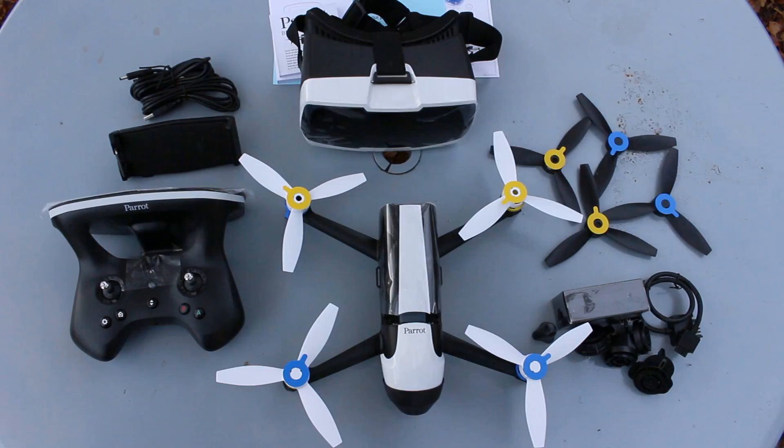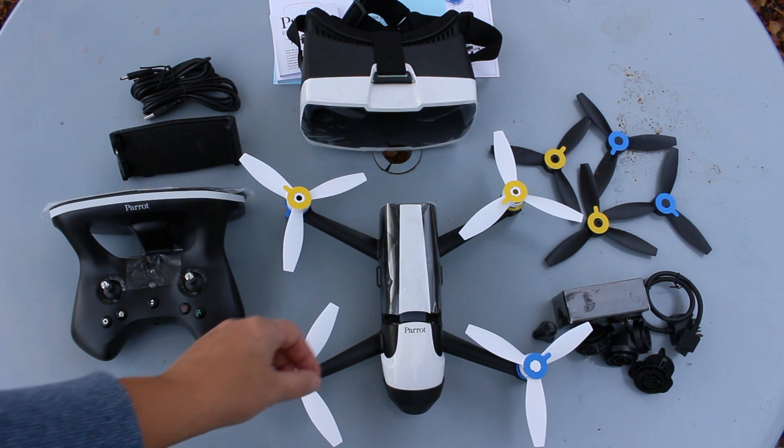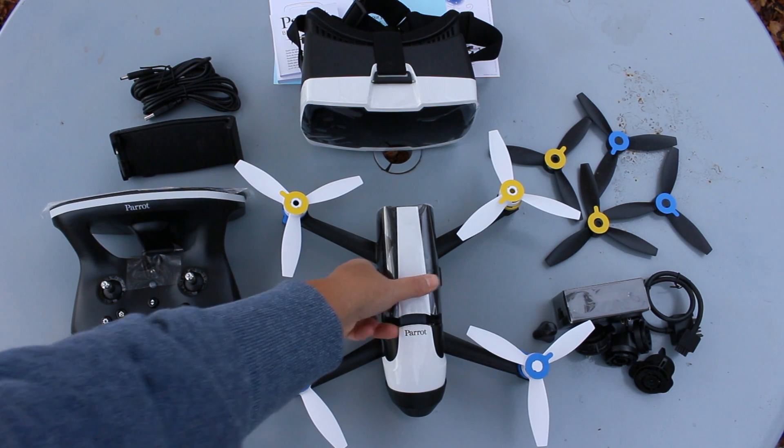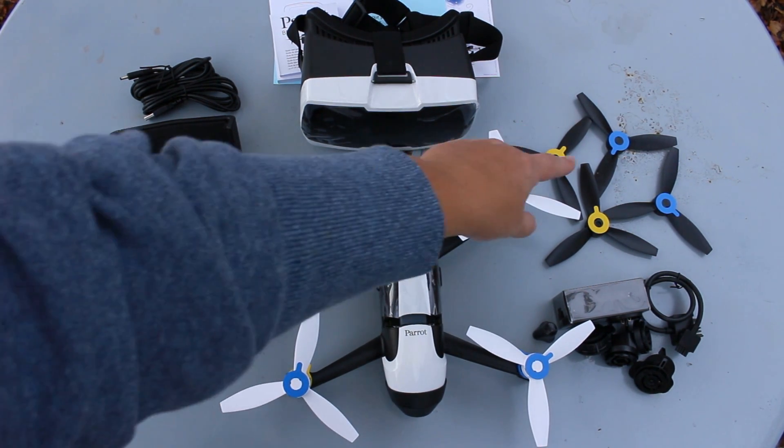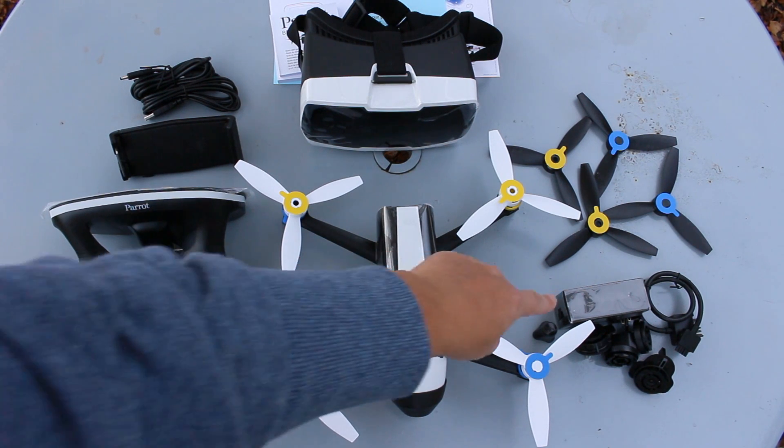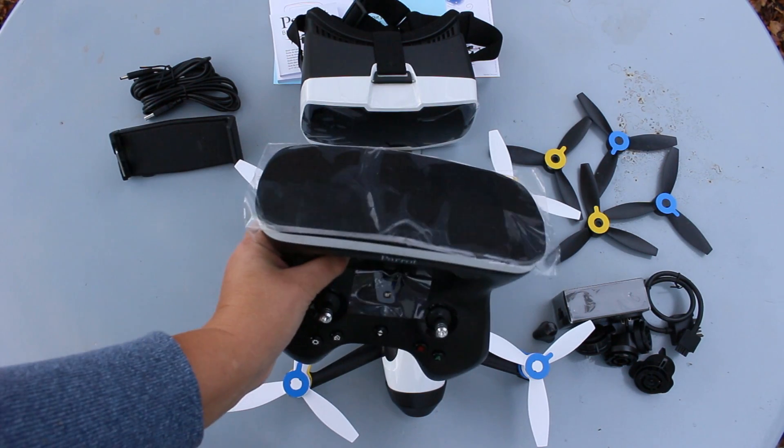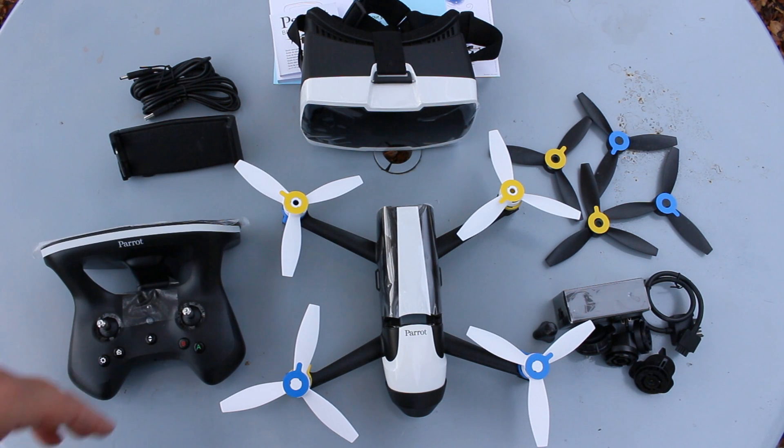All right. Here we go. Everything unboxed. This is the Parrot Bebop II FPV pack. Comes with the Parrot drone. Very cool little beast. Right now I've got the white rotors on. That's the right word. But it also comes with black, so you can use either. A whole bunch of chargers over there. Different countries. This is the sky controller. A bunch of cables. And also the first person view goggles.